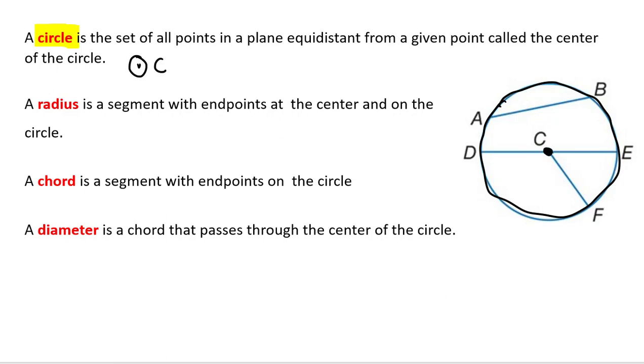The radius. The radius of the circle is from the center to a point on the circle. So in this case that's CF.